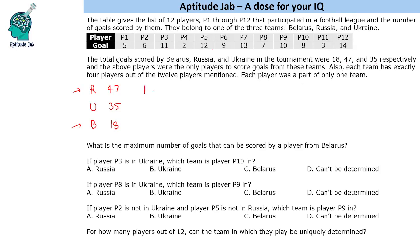Since 14 is present, P12 is identified as being in Russia. Now we need to find three numbers that sum to 33 for the remaining Russia players. Looking at large numbers, we can take 12, 11, and 10.